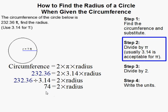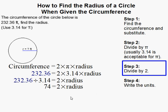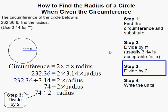And now my equation is 74 equals 2 times the radius. Now I just have to divide by 2 to solve for the radius, and I get 37.